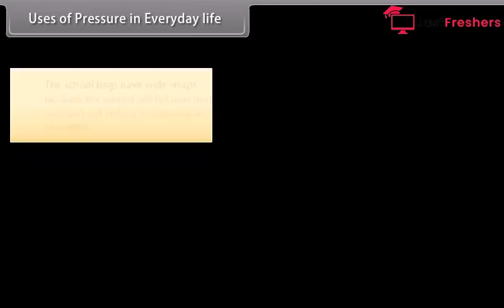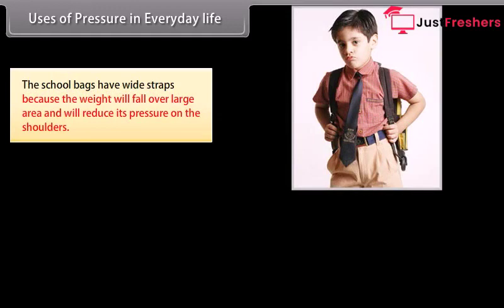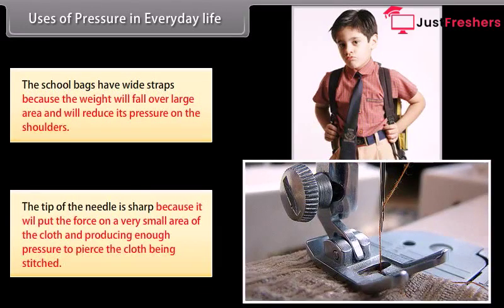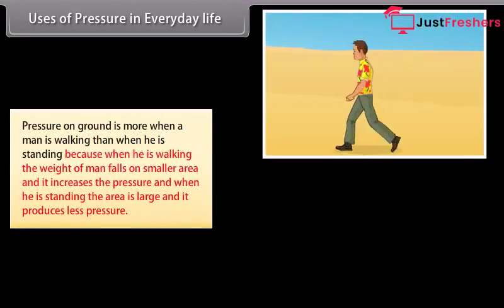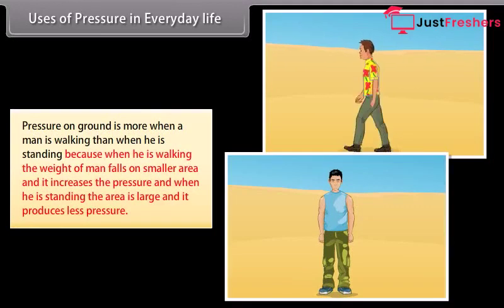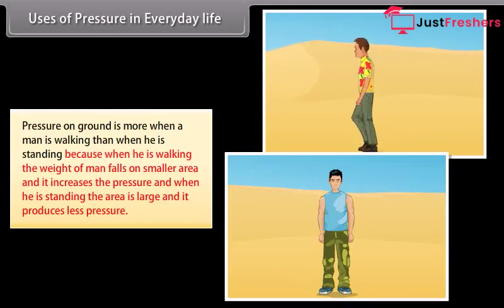Uses of pressure in everyday life: A wide strap on a bag distributes the load over a large area and reduces pressure on the shoulders. The tip of a needle is sharp so that force acts on a very small area, producing enough pressure to pierce cloth being stitched. Pressure on the ground is greater when a man is walking than when he is standing, because walking places weight on a smaller area, increasing pressure.